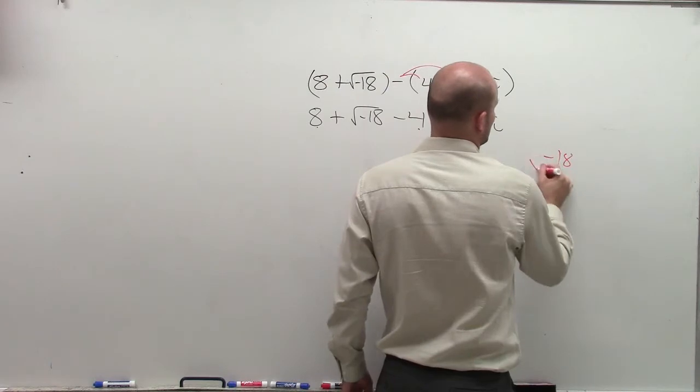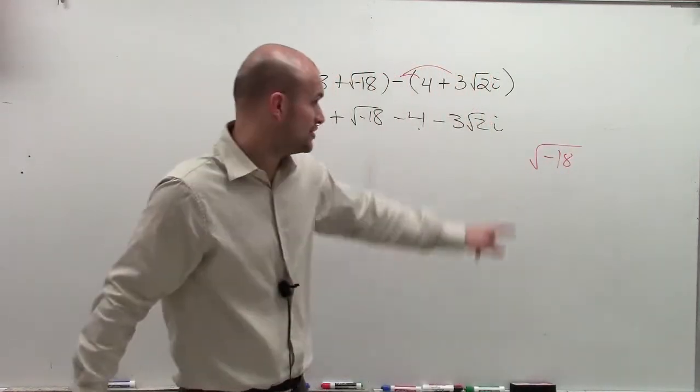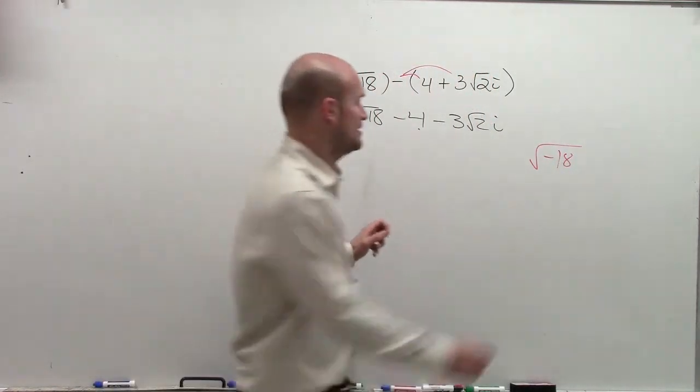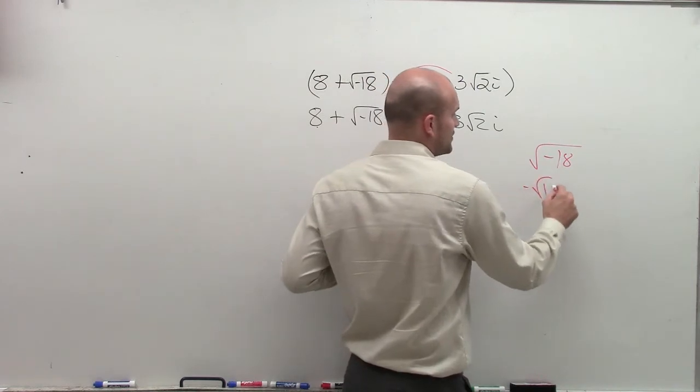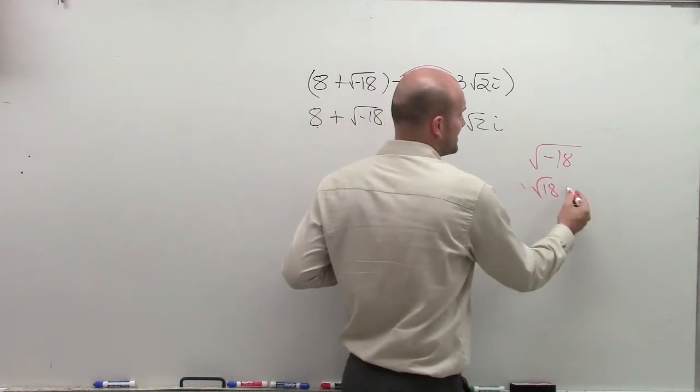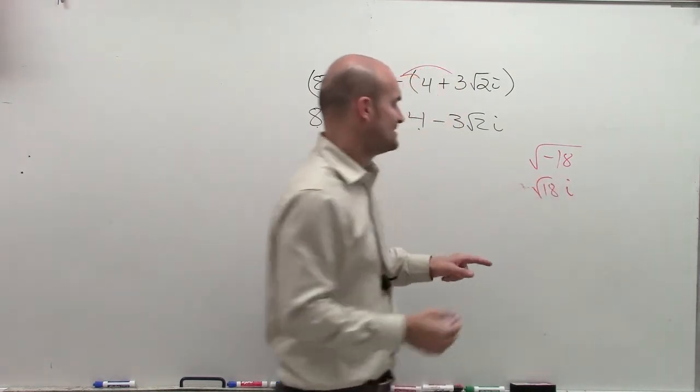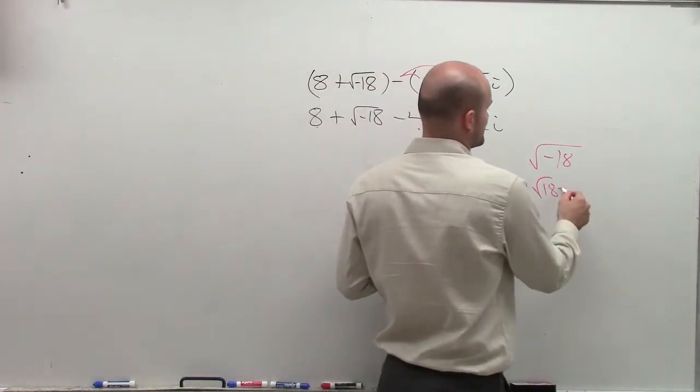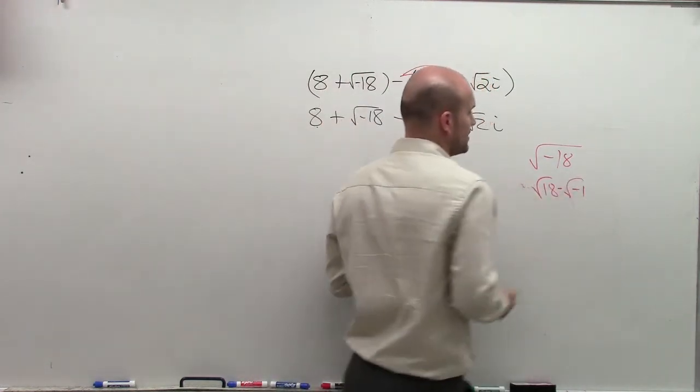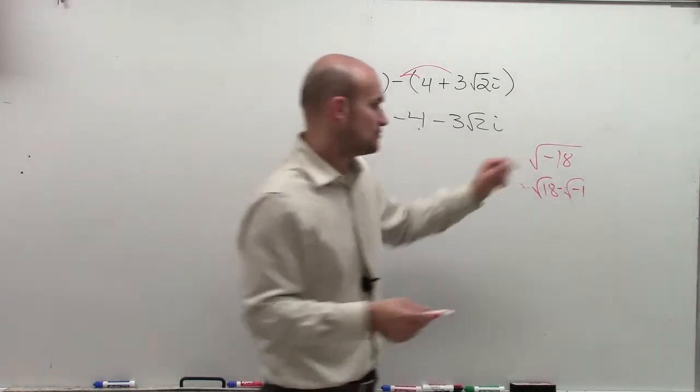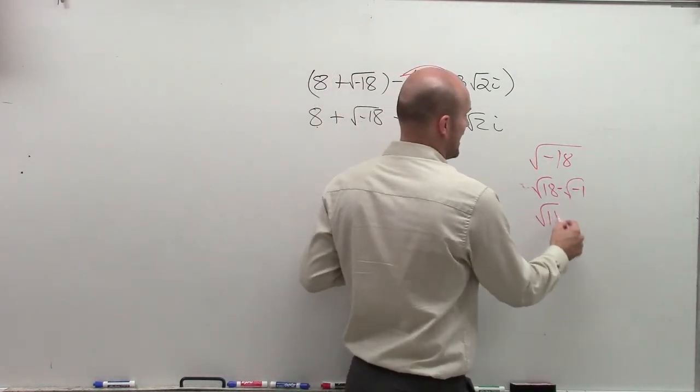So I have square root of negative 18. First thing we need to do is get rid of the negative. You can't have a square root of a negative number. So we can rewrite that as a square root of 18. I'm sorry, let's write it like this. The square root of 18 times the square root of negative 1. Square root of negative 1 we write as i.